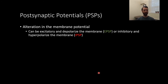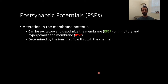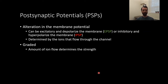Post-synaptic potentials can be excitatory, meaning they depolarize the membrane — we call that an EPSP or excitatory post-synaptic potential. They can also be inhibitory and hyperpolarize the membrane, so IPSP. This is determined by the ions that flow through. If positively charged ions like sodium flow into the neuron, the membrane potential depolarizes, making the inside more positive. If a potassium channel opens and lets potassium out, that's a hyperpolarization event making the inside more negative. PSPs are graded, meaning the amount of ion flow determines the strength.